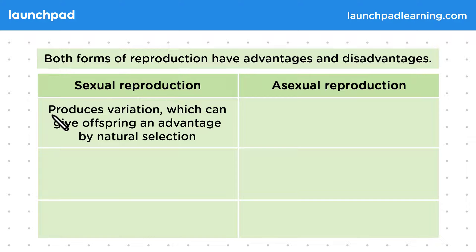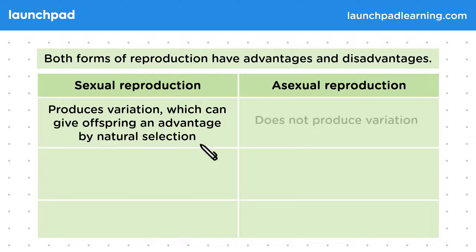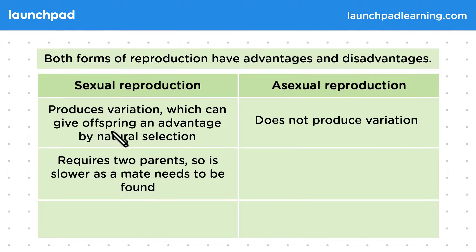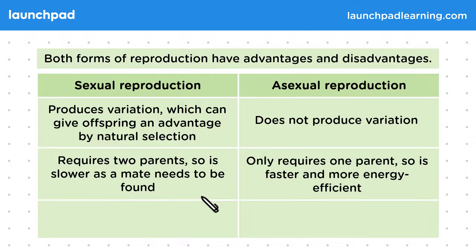Sexual reproduction produces variation which can give offspring an advantage by natural selection. Asexual reproduction does not produce variation. Sexual reproduction requires two parents so it's slower as a mate needs to be found. Asexual reproduction only requires one parent so it's faster and more energy efficient.